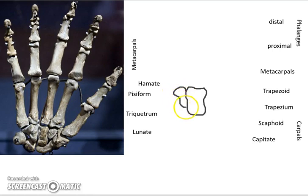So I think of hamate has a hook, H for hook, H for hamate. And you can feel this a little bit when you push down on your hand, that part of the wrist.